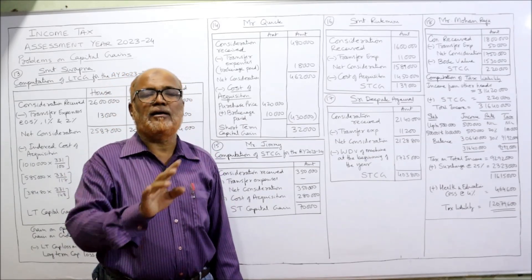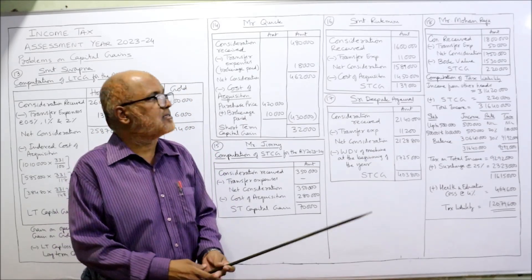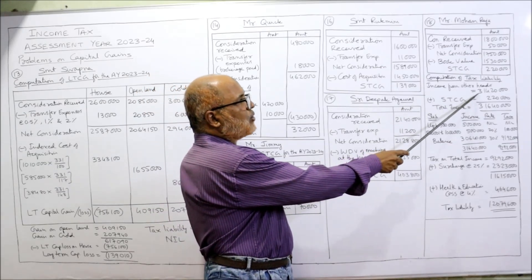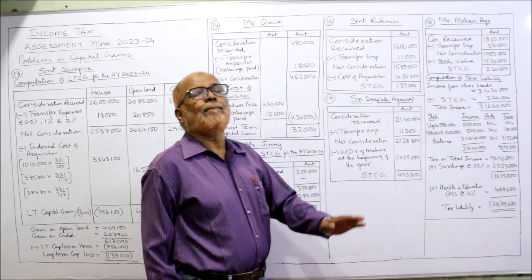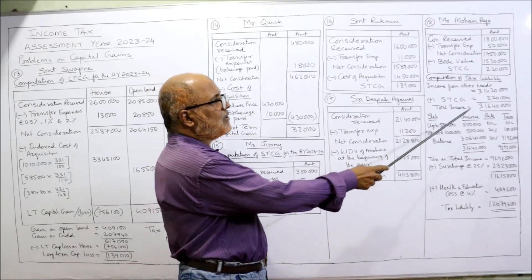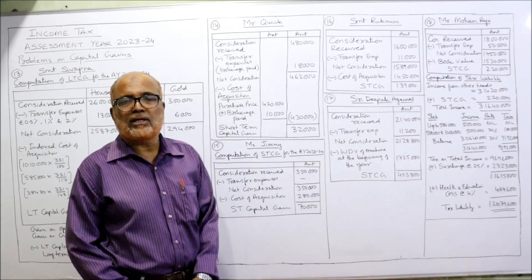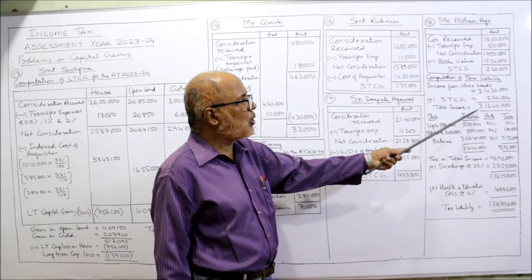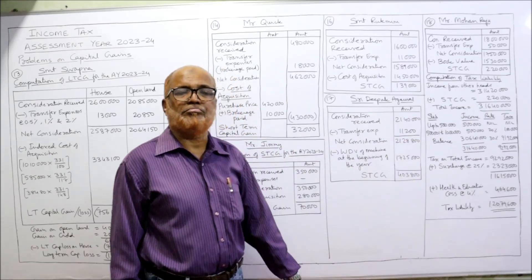This short-term capital gain will be added to income under other heads, because for short-term capital gain no flat rate applies — slab system applies along with other income. Income from other heads ₹3,14,20,000 plus short-term capital gain ₹2,20,000 = total income ₹3,16,40,000.